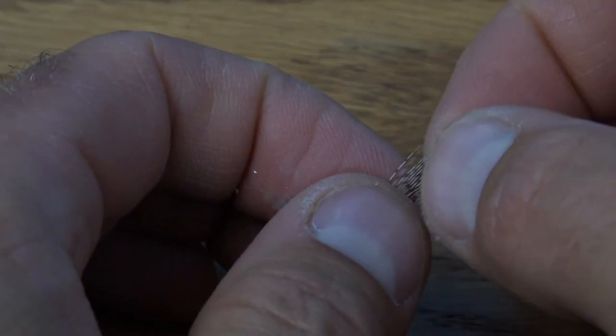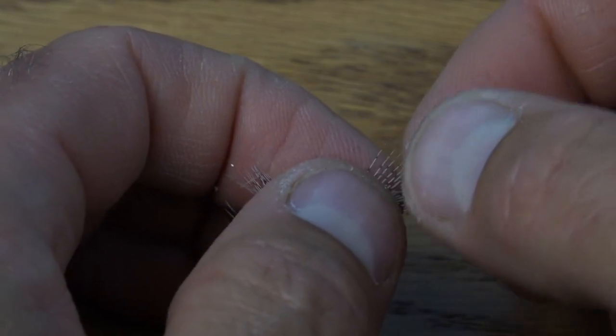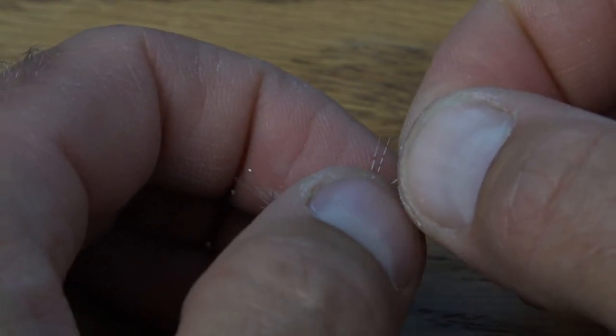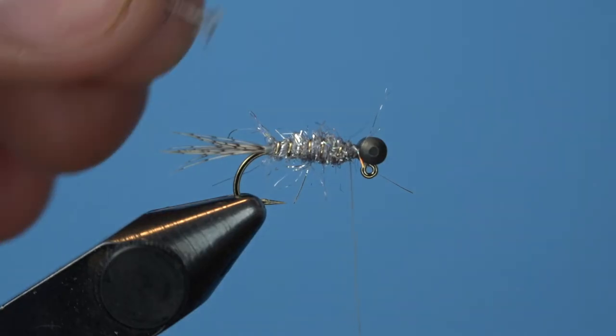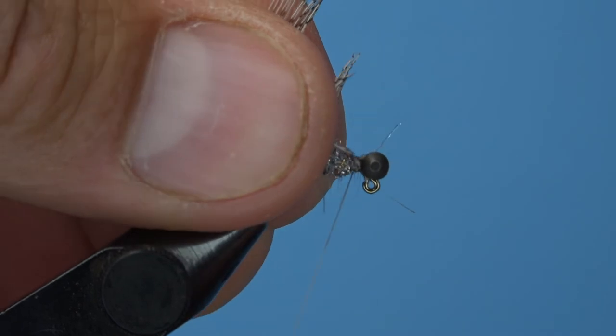When you get as many fibers pulled down as you can, bring in some sharp scissors and trim the tip of the feather to form a small triangle tie-in point. Bring this feather to your hook and capture that triangle right on top just behind the barbell eyes.